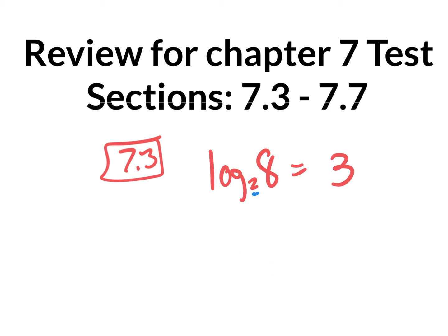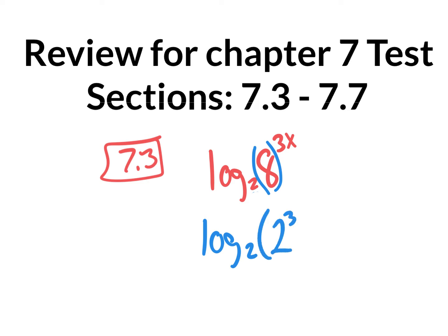To verify that you actually know this stuff, instead of just saying log base 2 of 8, I might say log base 2 of 8 to the 3x power, because the online log calculator won't do variables. So you would rewrite 8 as 2 to the 3rd, giving you log base 2 of 2 to the 3rd, still raised to the 3x power. A power to a power means we multiply, so we end up with 9x. Log base 2 of 2 eliminates and 9x comes down.